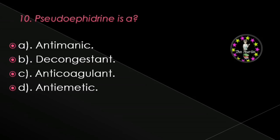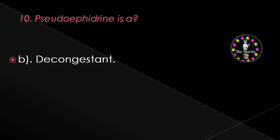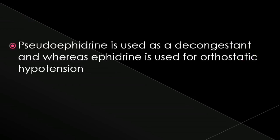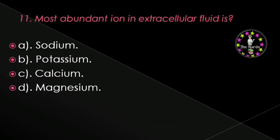Next question: Pseudoephedrine is — anti-manic, decongestant, anti-coagulant, or anti-emetic? Correct answer is decongestant. Pseudoephedrine is used as a decongestant, whereas ephedrine is used for orthostatic hypotension.